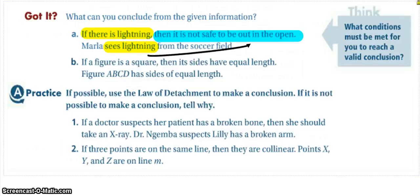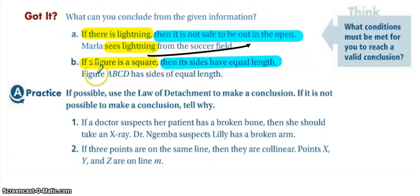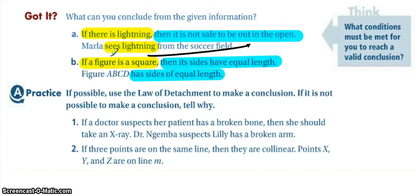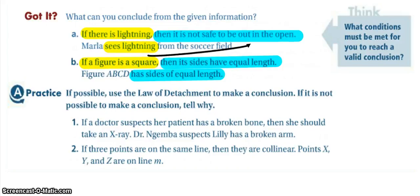If we look at B, it's a different situation. The hypothesis says if the figure is a square, and our conclusion is then it has sides of equal length. The given statement says figure ABCD has sides of equal length — it is satisfying the conclusion, not the hypothesis. We cannot conclude it's a square because we know nothing about the angle measures, so no conclusion can be made.